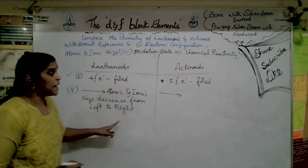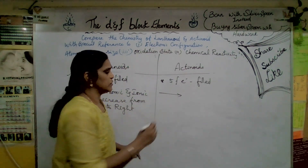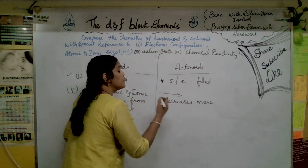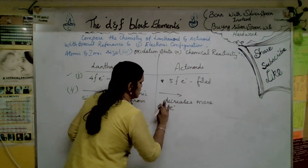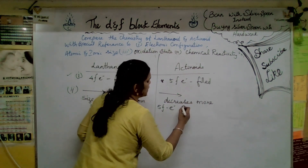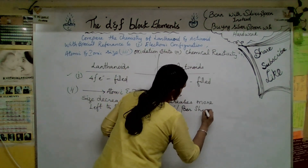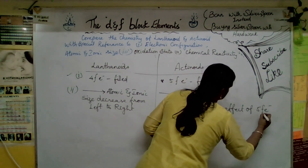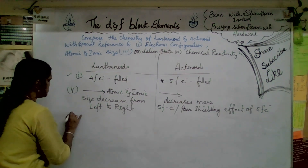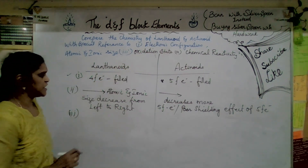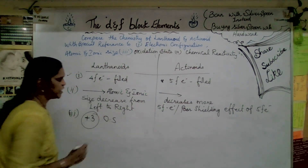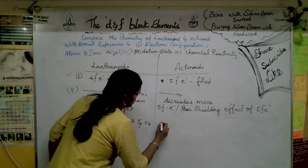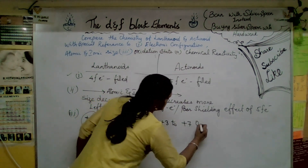Both lanthanoids and actinoids decrease in size from left to right. But comparatively, actinoids decrease more due to the poor shielding effect of 5F electrons. Regarding oxidation state: lanthanoids are generally in plus 3 oxidation state, with very few elements showing plus 2 and plus 4. Whereas actinoids show plus 3 to plus 7 oxidation states.